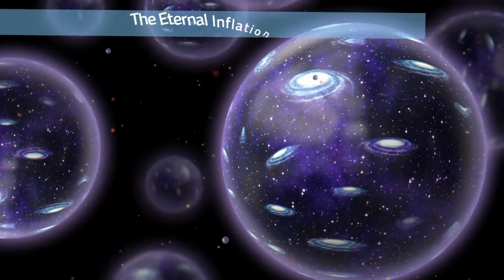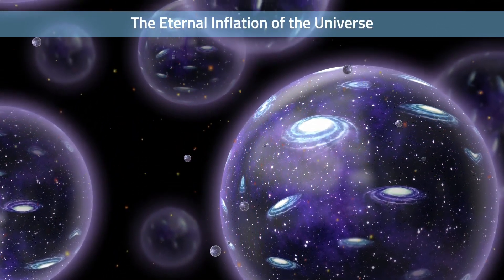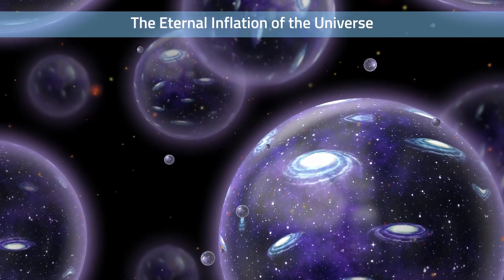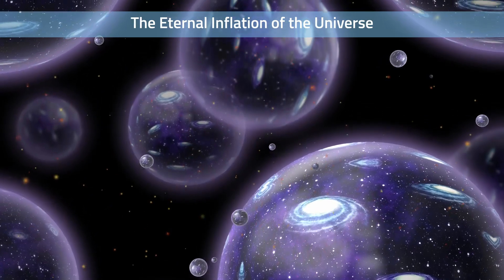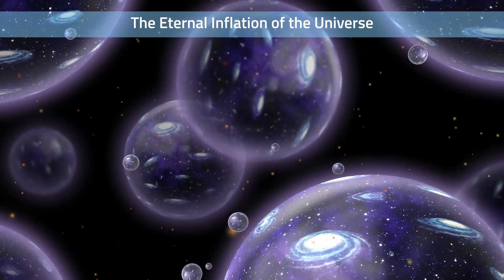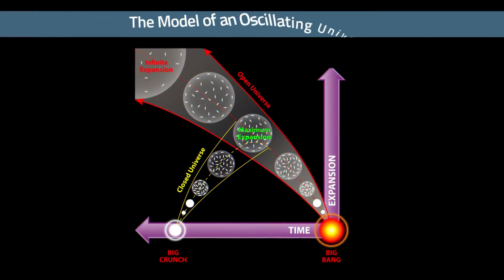The eternal inflation of the universe simply states that after the Big Bang, the formation of the universe never stopped and is continuously making other universes which could be different or similar to our own in terms of physical laws. The model of an oscillating universe states that a similar construction and return to that singularity is called the Big Crunch.